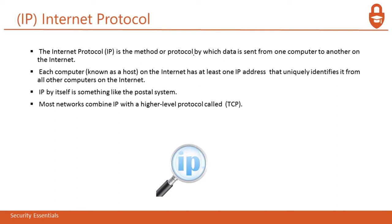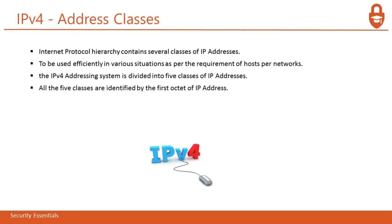IP by itself is something like the postal system. Most networks combine IP with a higher level protocol called TCP, which we will discuss later. IPv4 addresses are Internet Protocol hierarchies containing several classes of IP addresses to be used efficiently in various situations. The IPv4 addressing system is divided into five classes of IP addresses, all five identified by the first octet of the IP address.